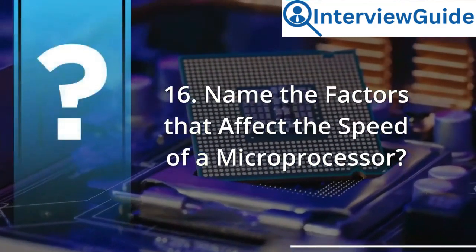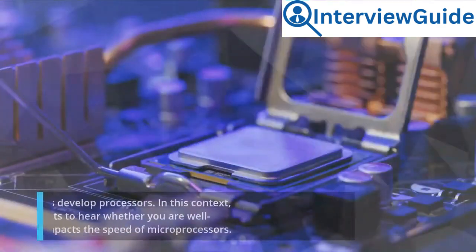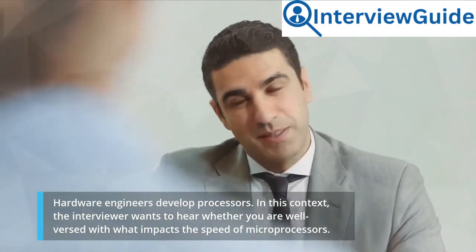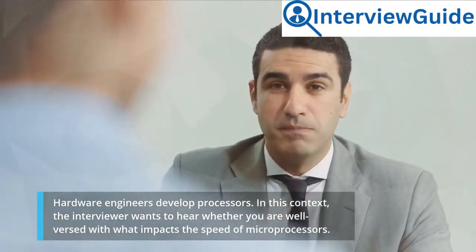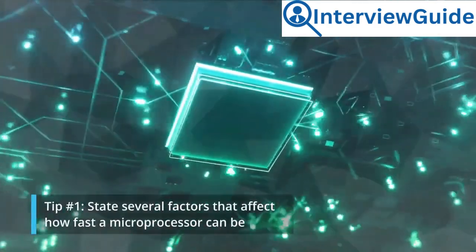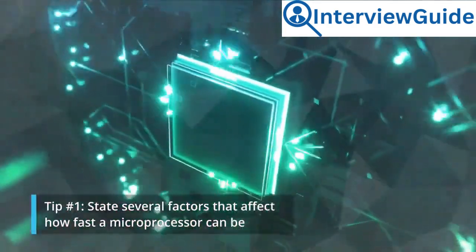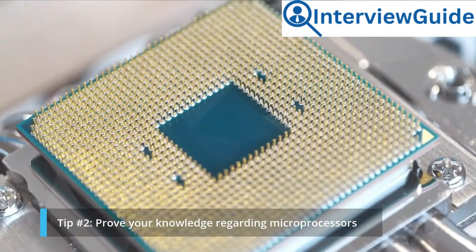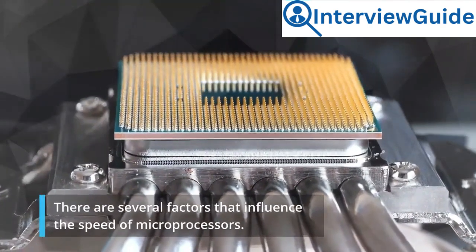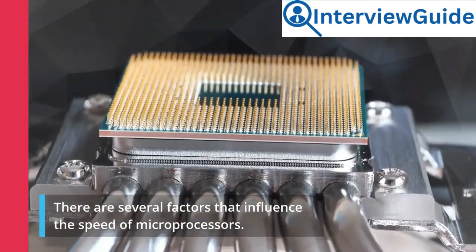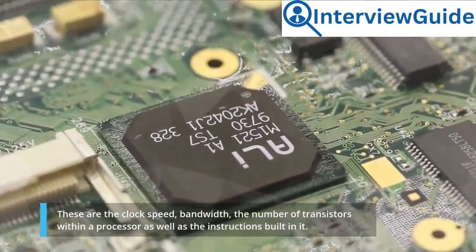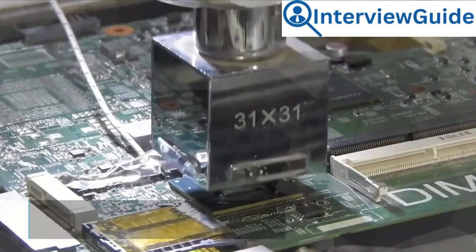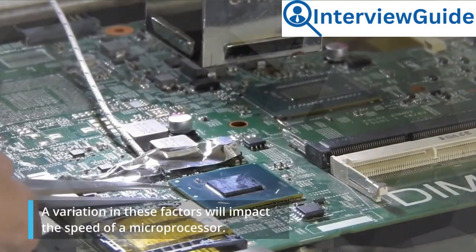Question 16: Name the factors that affect the speed of a microprocessor. Hardware engineers develop processors. In this context, the interviewer wants to hear whether you are well versed with what impacts the speed of microprocessors. Tip number 1: state several factors that affect how fast a microprocessor can be. Tip number 2: prove your knowledge regarding microprocessors. Sample answer: There are several factors that influence the speed of microprocessors. These are the clock speed, bandwidth, the number of transistors within a processor as well as the instructions built in it. A variation in these factors will impact the speed of a microprocessor.